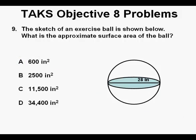Problem 9. The sketch of an exercise ball is shown below. What is the approximate surface area of the ball? This problem is finding the surface area of a sphere. And here from the TAKS formula chart is the formula for the surface area of a sphere. It's the surface area equals 4 times pi times the radius squared.